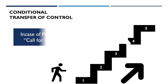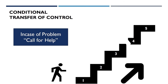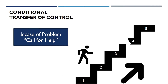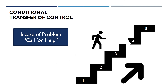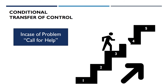Let's see an example of conditional transfer of control for when an error occurs. If I say, in case of a problem call for help, and then tell you to move through steps one, two, three, four, and five — you start moving through step one, step two, step three — and when you reach step three you see that the staircase is broken and you cannot reach step four. What will you do? You will stop there and ask for help.